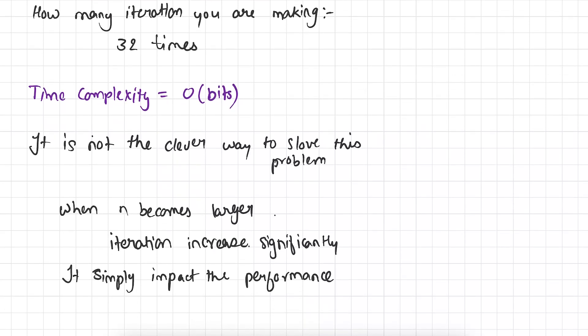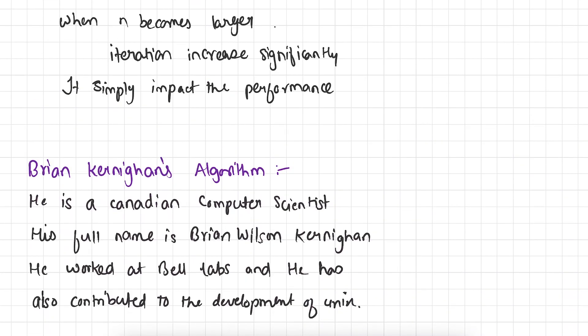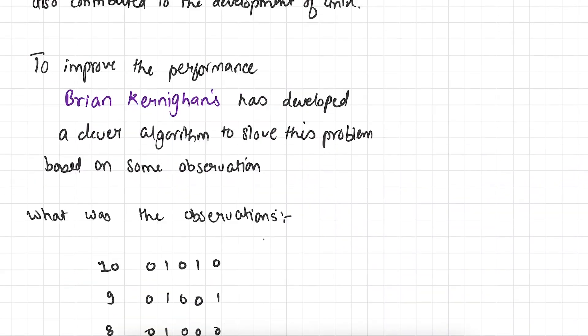So how to solve this problem in an efficient way? This is where Brian Kernighan's algorithm comes into picture. Who is Brian Kernighan? He is a Canadian computer scientist. His full name is Brian Wilson Kernighan. He worked at Bell Labs and also contributed to the development of the Unix operating system. So this is just a little bit of background about Mr. Brian. To improve the performance of this algorithm, Brian Kernighan developed a clever algorithm to solve this problem, based on some observations.